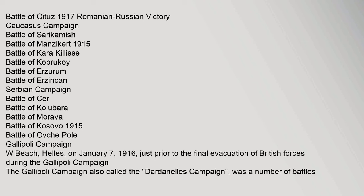Romanian Campaign 1916: Battle of Transylvania — Central Powers Victory; Battle of Târgu Jiu — Central Powers Victory; Battle of Dobrich — Bulgarian Victory; First Battle of Cobadin — Romanian-Russian Victory; Battle of Sibiu 1916; Battle of Bran-Câmpulung Area; Battle of Oituz 1917 — Romanian-Russian Victory. Caucasus Campaign: Battle of Sarikamish; Battle of Manzikert 1915; Battle of Kara Killisse; Battle of Köprüköy; Battle of Erzurum; Battle of Erzincan. Serbian Campaign: Battle of Cer; Battle of Kolubara; Battle of Morava; Battle of Kosovo 1915; Battle of Ovče Pole.